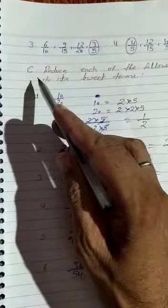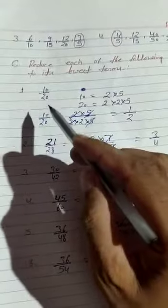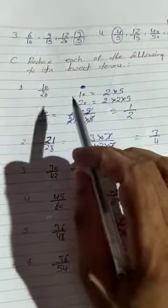Question C: Reduce each of the following fractions to its lowest term. We have to reduce the fractions to lowest term.